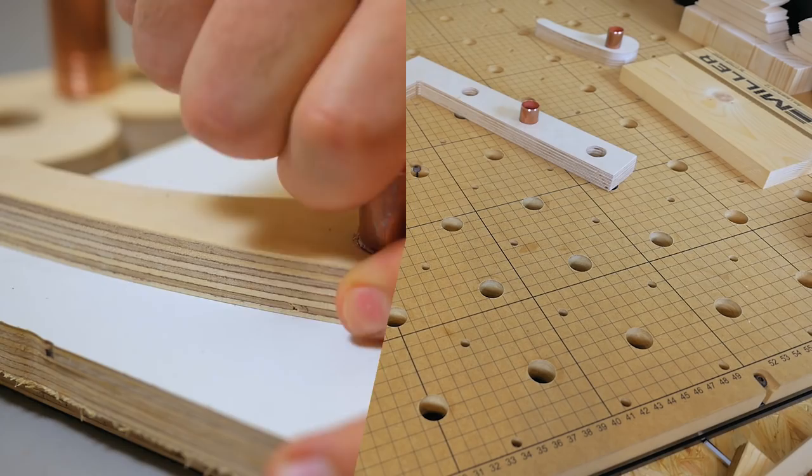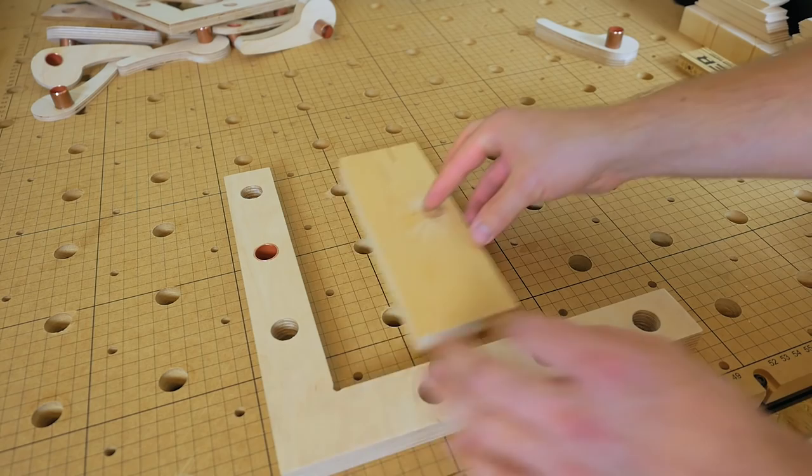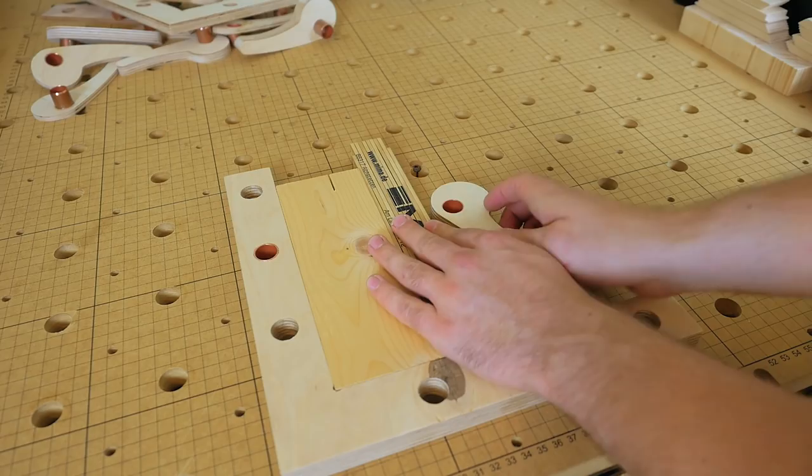The way this is supposed to work is you just grab a fence, put it in place, take whatever workpiece you have, grab a cam and a spacer to protect the edge, and then clamp it. Very quick to set up.